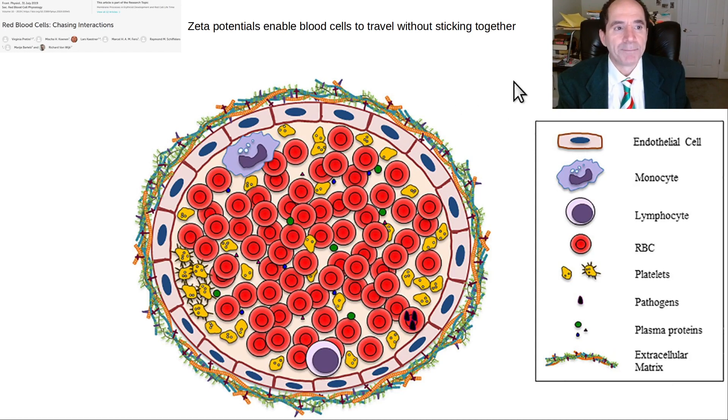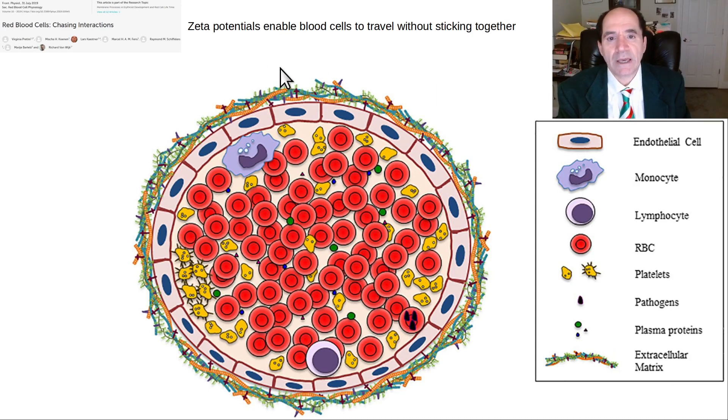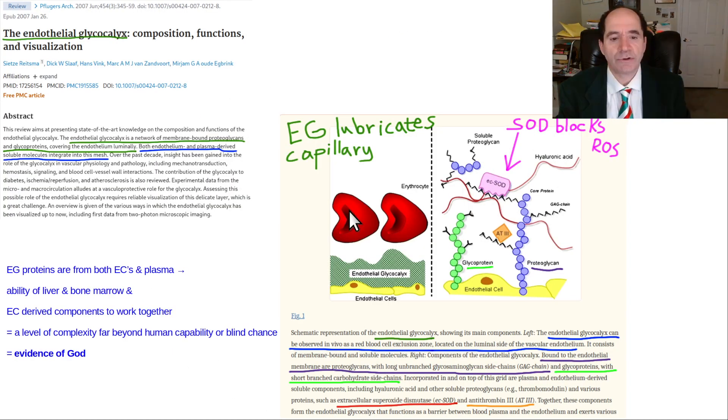Here we're looking at zeta potential. All blood cells have zeta potential - a negative charge on their outer surface so they don't stick together or clot in the blood. The endothelial cells have the glycocalyx with a negative charge. The negative charge gets them to repel each other so they don't stick together. The red blood cells float through the arteries and capillaries, and the endothelial glycocalyx sugar coating with all its negative charges repels their zeta potential. That's exactly what you want.